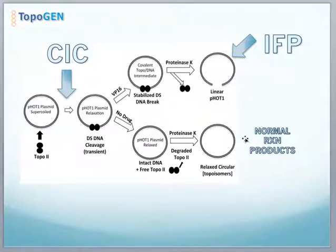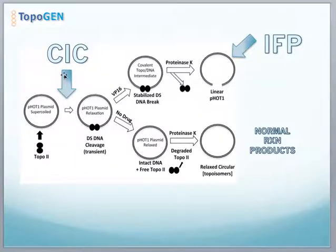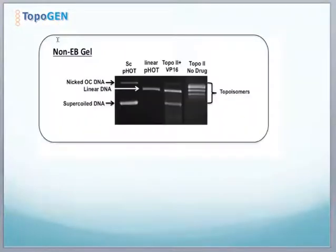Another class of drug is a CIC, which stands for catalytic inhibitory compound. These inhibitors simply block the activity of the enzyme, which is illustrated here where you lose the ability to relax the DNA totally.